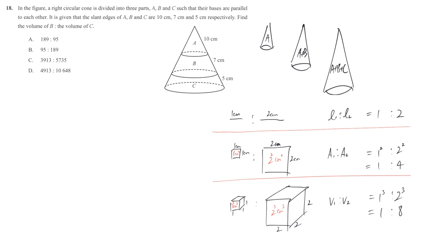We have the length ratio, and we're going to transfer it to area ratio in order to get the volume of B and C later on. So, the length of A is 10, while the length of A plus B together is 10 plus 7, we get 17. And also, A plus B plus C, that means the biggest cone is 10 plus 7 plus 5, we get 22.